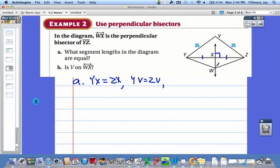We're also given in the picture that YV is equal to ZV in length because they're both 25. And finally, since W lies on the perpendicular bisector, it's equidistant from points Y and Z. So WY, the length of it, is equal to the length of WZ because W is equidistant from our two endpoints because it lies on our perpendicular bisector.